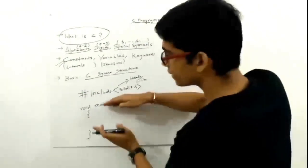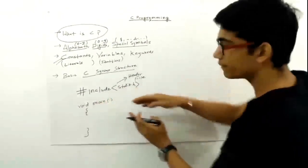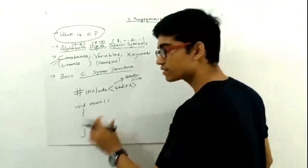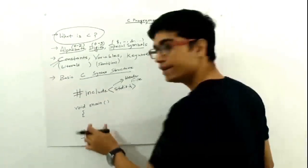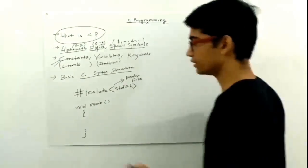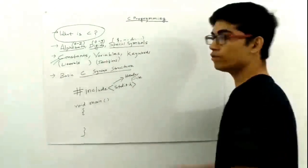Now, what is this main function? This is a function which is a container of all the statements that we will write in C. A statement is basically the instructions that we feed into the program. Let me tell you how we will print hello world, the first program in C.